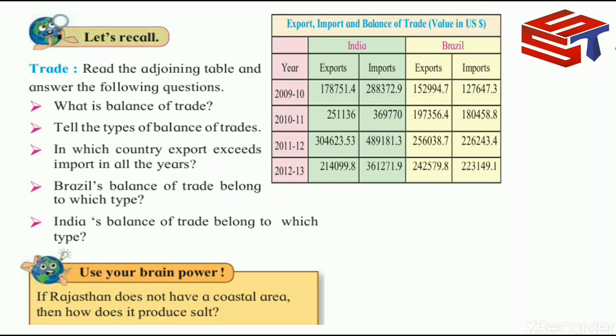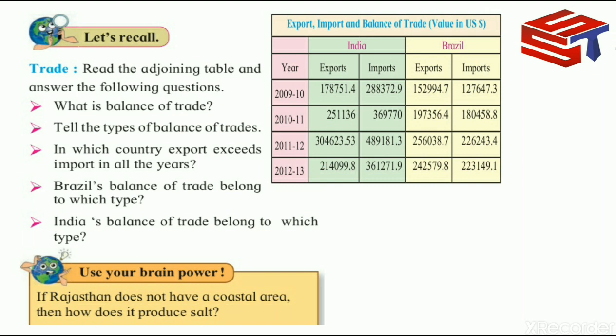Thus Rajasthan produces salt even though it does not have a coastal area, because of the Sambar Salt Lake.